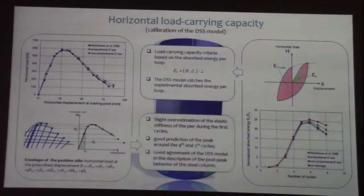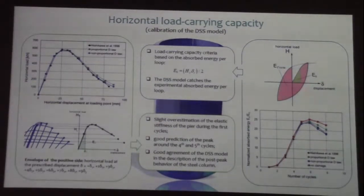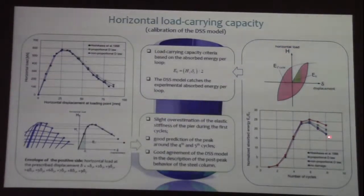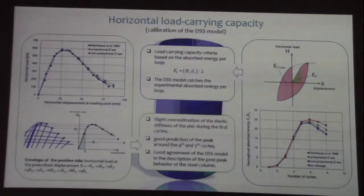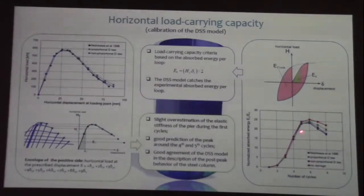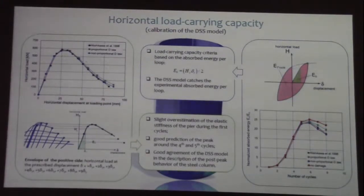Switching to the horizontal loading failure criteria for the structure: Nishikawa proposed an energy-based criterion based on the amount of energy the structure can absorb per loop, in terms of work done by the horizontal load against displacement. They plotted the normalized absorbed energy per loop and observed that after the sixth cycle there was no more absorbed energy — the structure tended to decrease its energy absorption. As shown, the non-proportional damage law can catch quite well both the peak and the decrease of absorbed energy per loop.